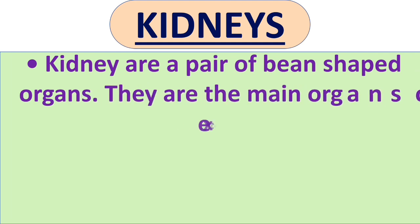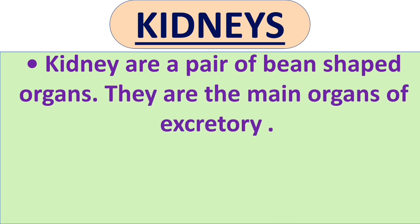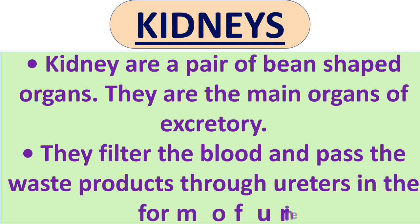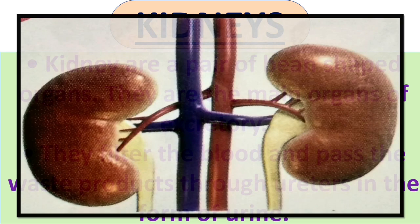Now let us have a look at these organs in detail. First, we will look at kidneys. Kidneys are a pair of bean-shaped organs. They are the main organs of the excretory system. They filter the blood and pass the waste product through the ureters in the form of urine. In the picture, you can see the bean-shaped kidney.